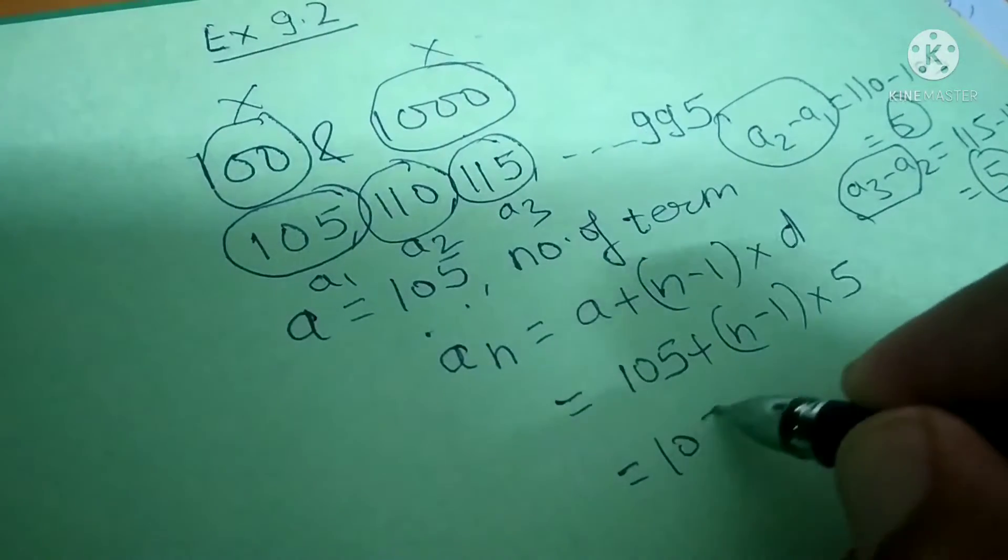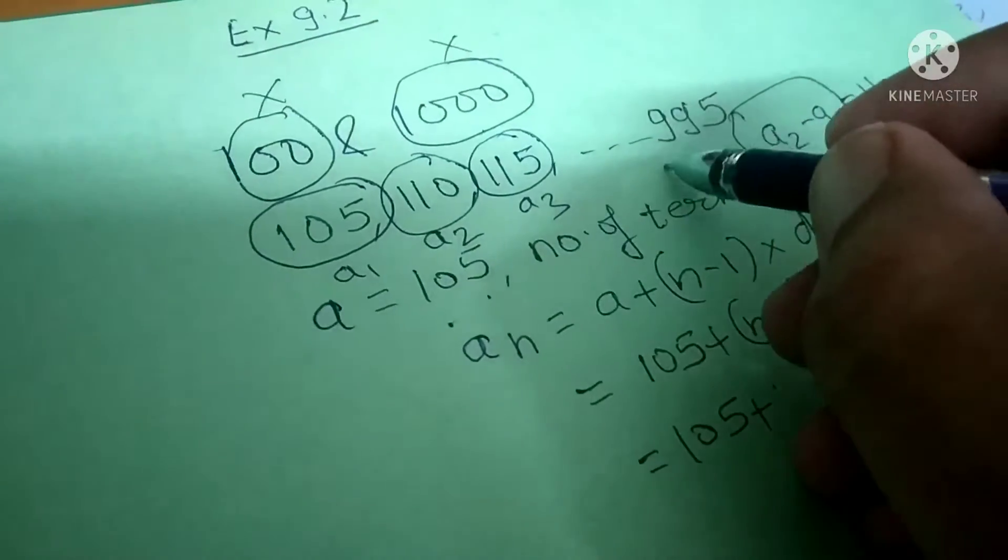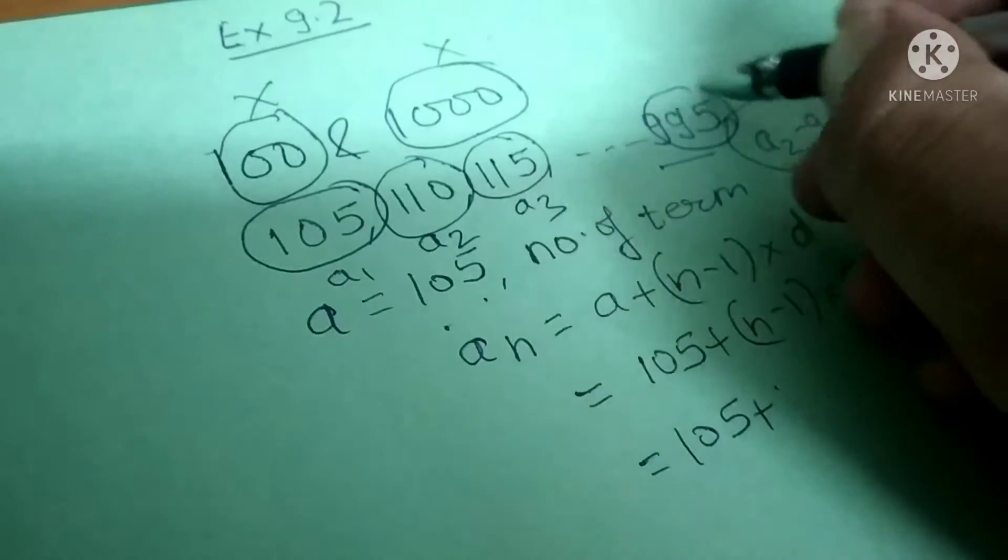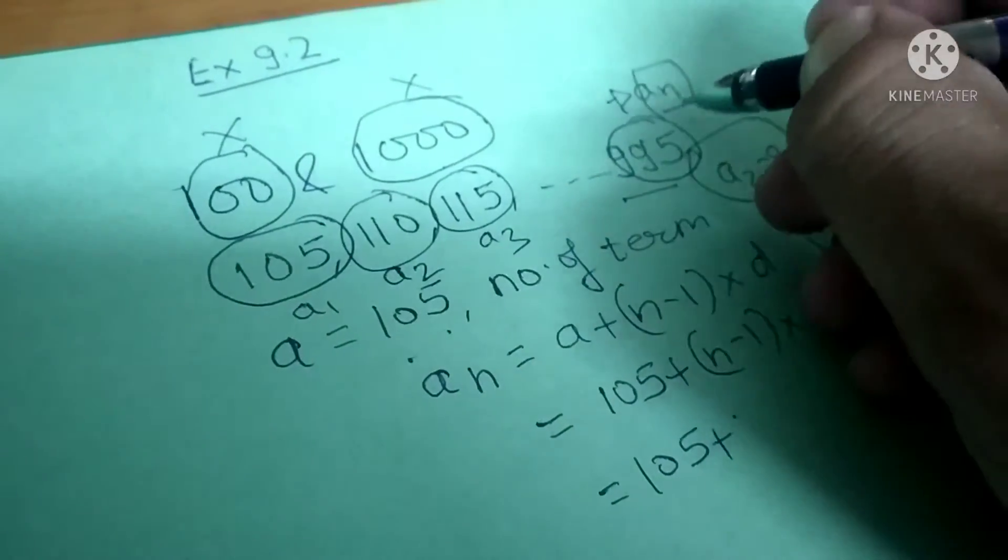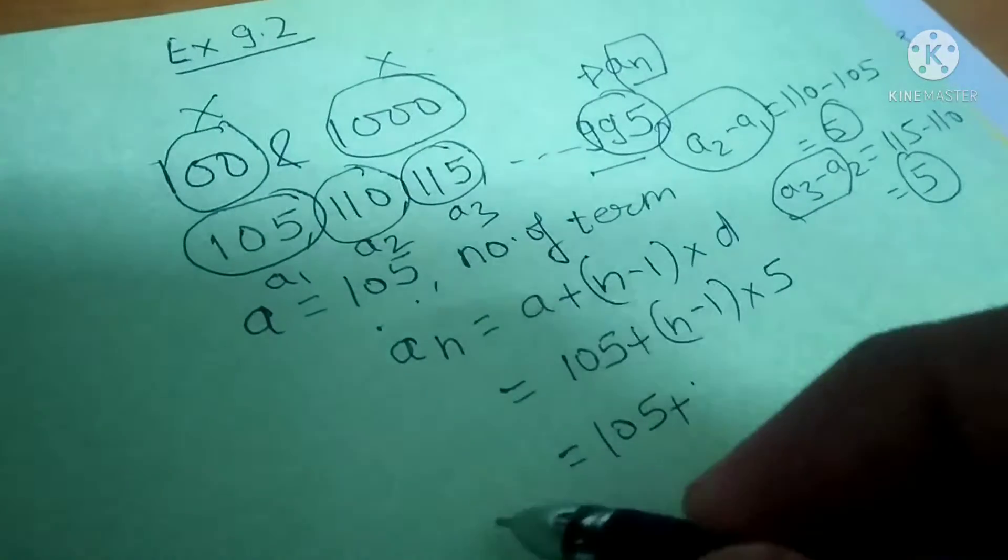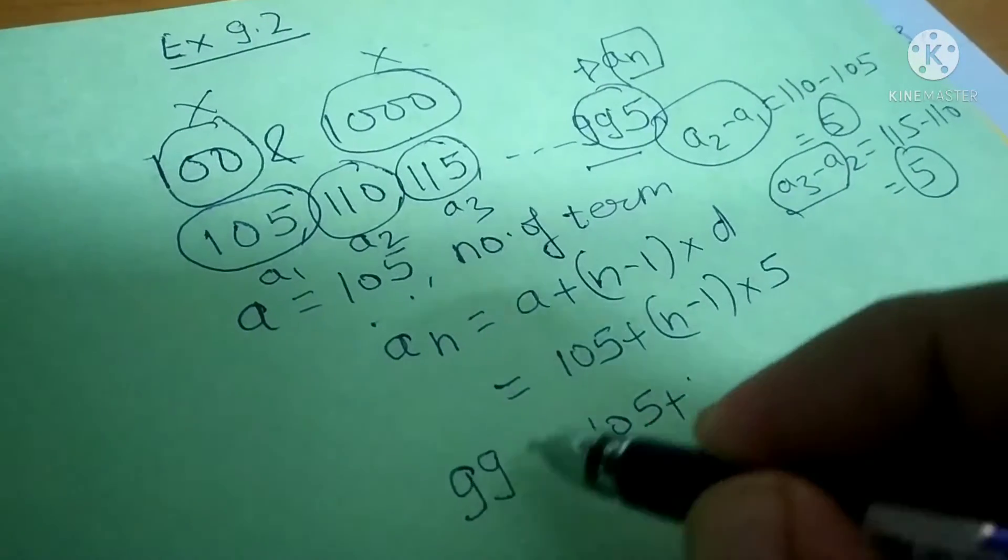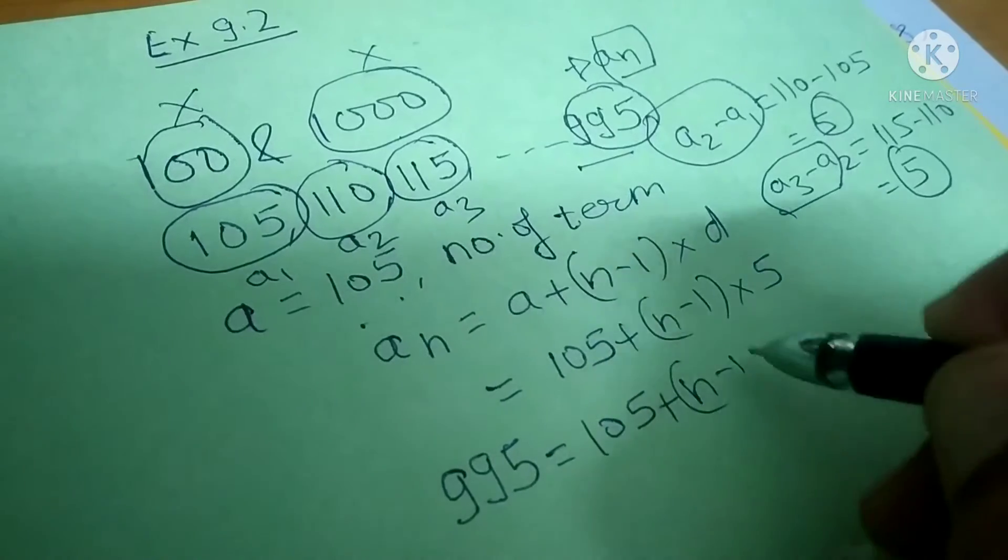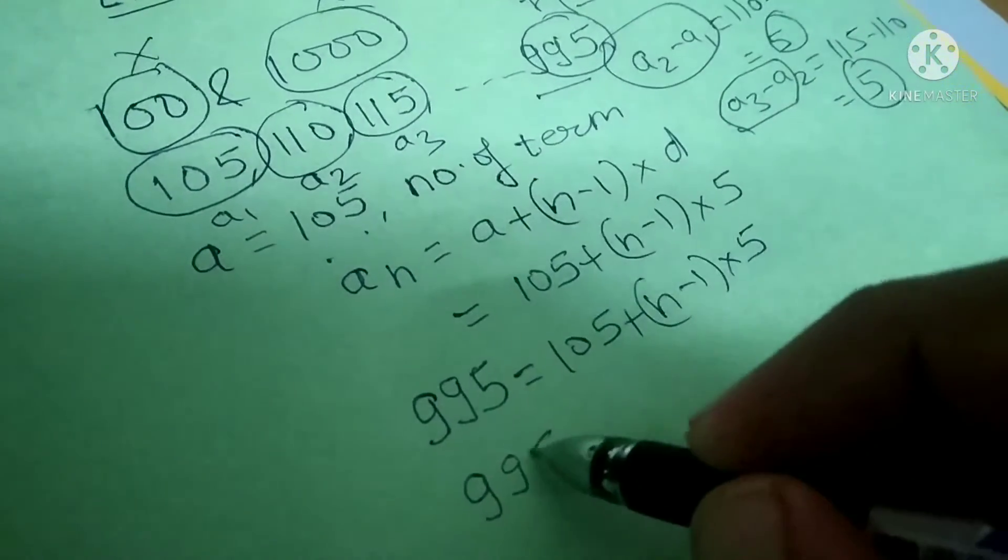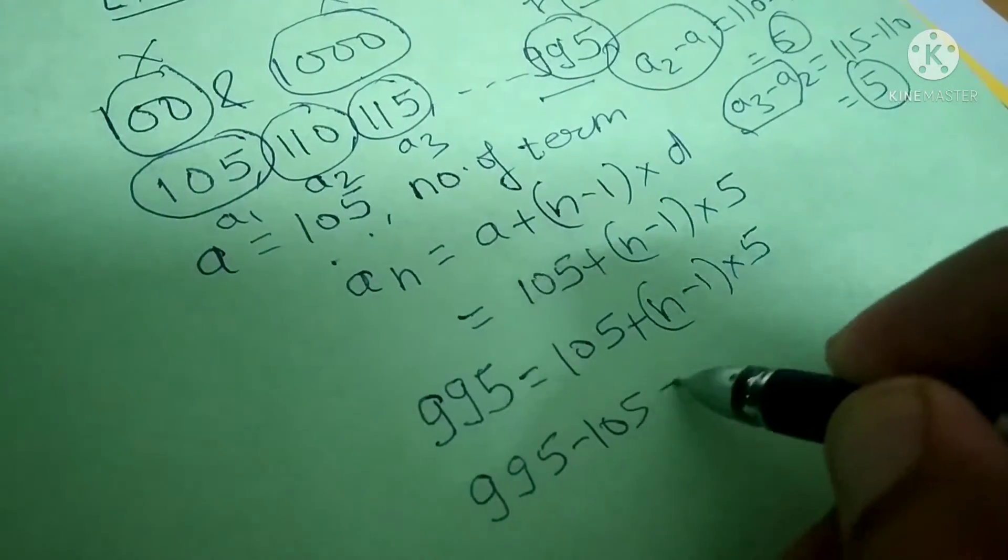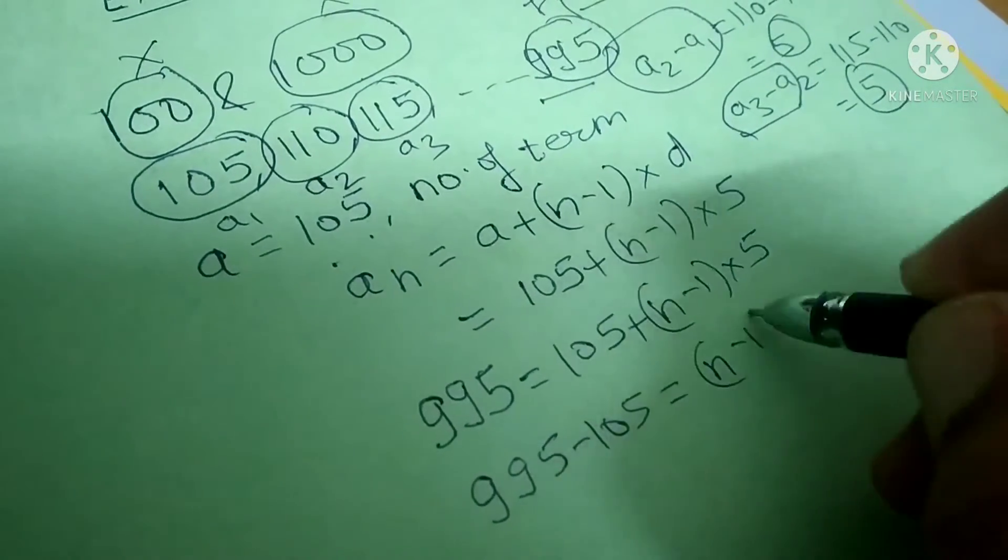So this is 105 plus n minus 1 whole into 5. The nth term, which is the last term, is 995. So 995 equals 105 plus n minus 1 whole into 5. Therefore 995 minus 105 equals n minus 1 whole into 5.